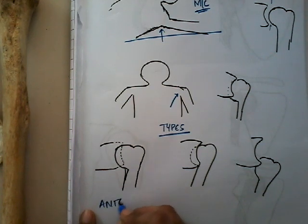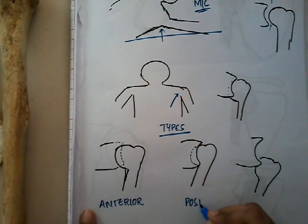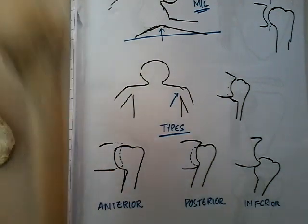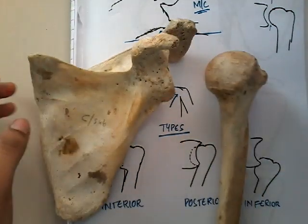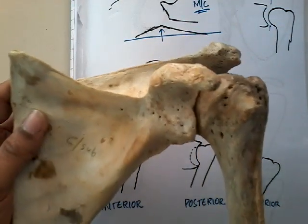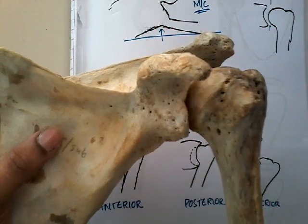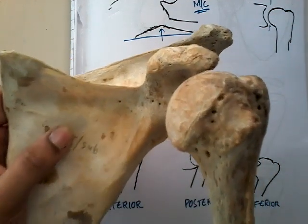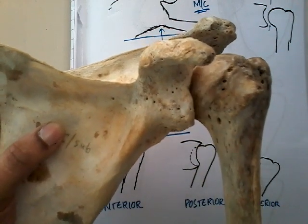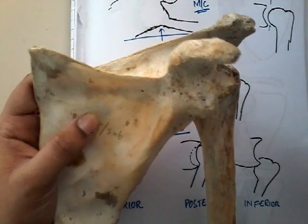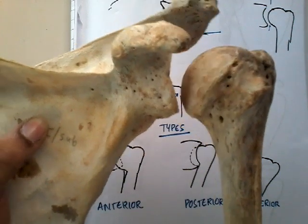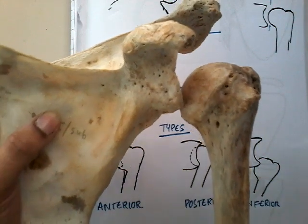In anterior dislocation the head is anterior; in posterior dislocation the head is posterior; in inferior dislocation the head is at a level lower than the glenoid labrum. Looking at the diagram: this is the normal joint; in anterior dislocation the head comes anteriorly; in posterior dislocation the head lies posteriorly; in inferior dislocation the head lies at a lower level.